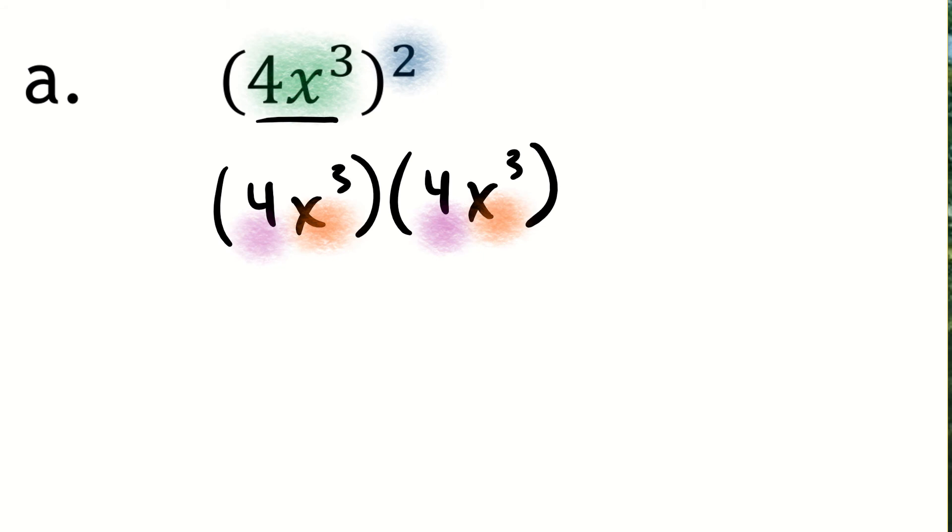When I multiply 4 by 4, I get the number 16. So this product of 16 is coming from the 4 times 4. And then I also am multiplying 3 factors of x times 3 more additional factors of x, for a total of 6 factors of x. So my final answer is 16 times x to the sixth power.